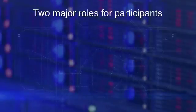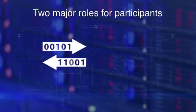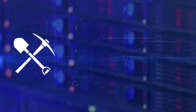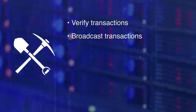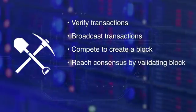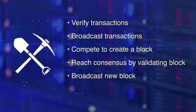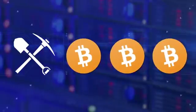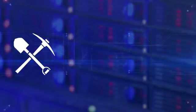In this lesson, we explore some of the fundamental operations of the Bitcoin blockchain. First, we have to discuss the participants. There are two major roles: participants that initiate transfer of value by creating a transaction, and additional participants called miners who take on added work or computation to verify transactions, broadcast transactions, compete to claim the right to create a block, work on reaching consensus by validating the block, broadcasting the newly created block, and confirming transactions. Miners are incentivized with Bitcoins for their efforts in managing the blockchain.